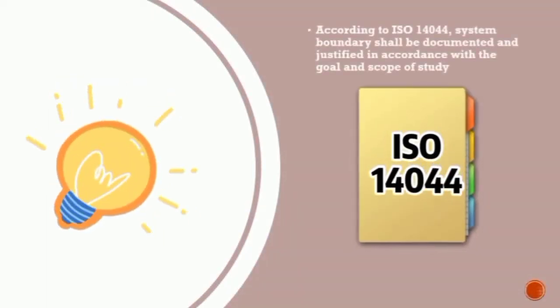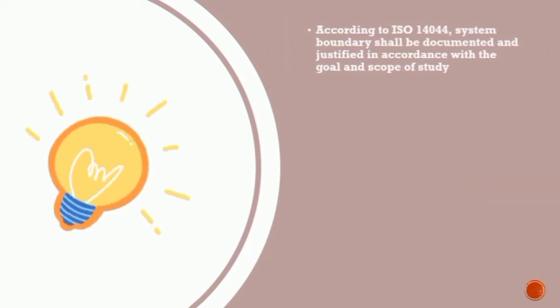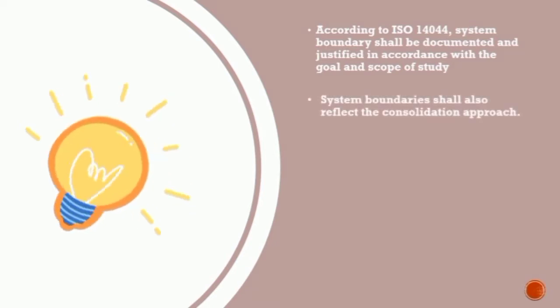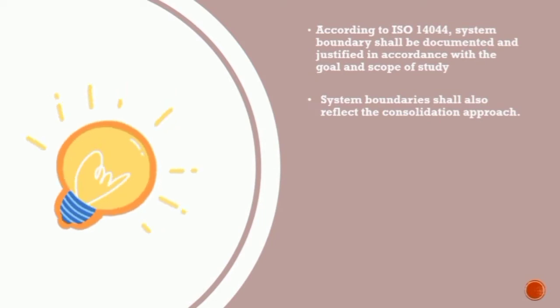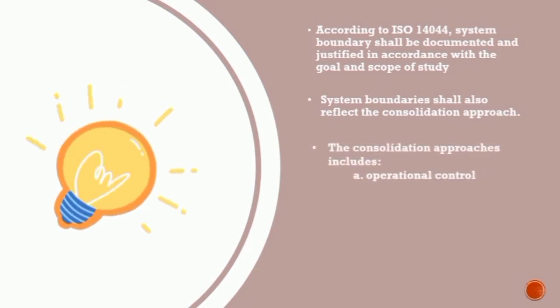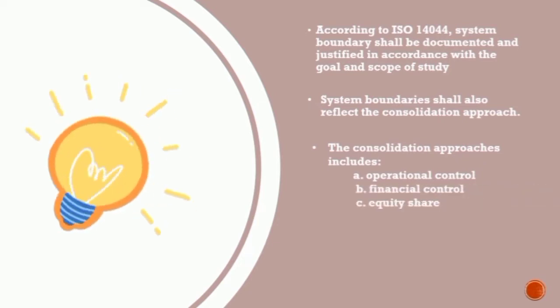According to ISO 14,044, system boundaries shall be documented and justified in accordance with the goal and scope of the study. For organizations, system boundaries shall reflect the consolidation approach. The consolidation approaches include A. Operational control, B. Financial control, and C. Equity share.